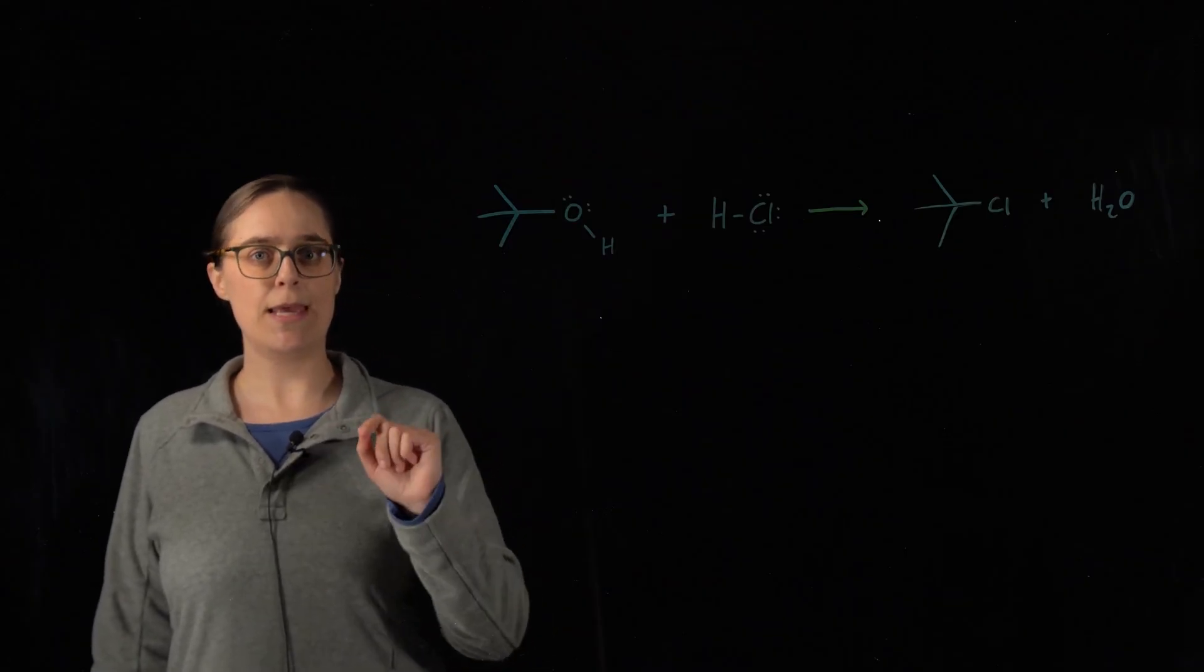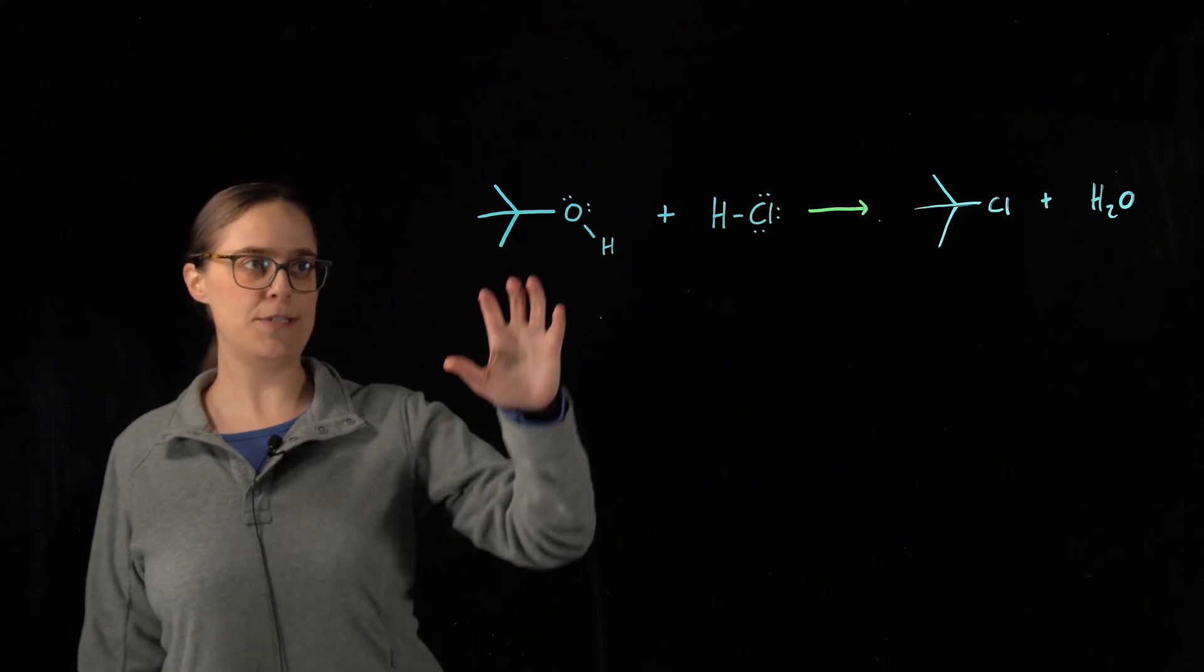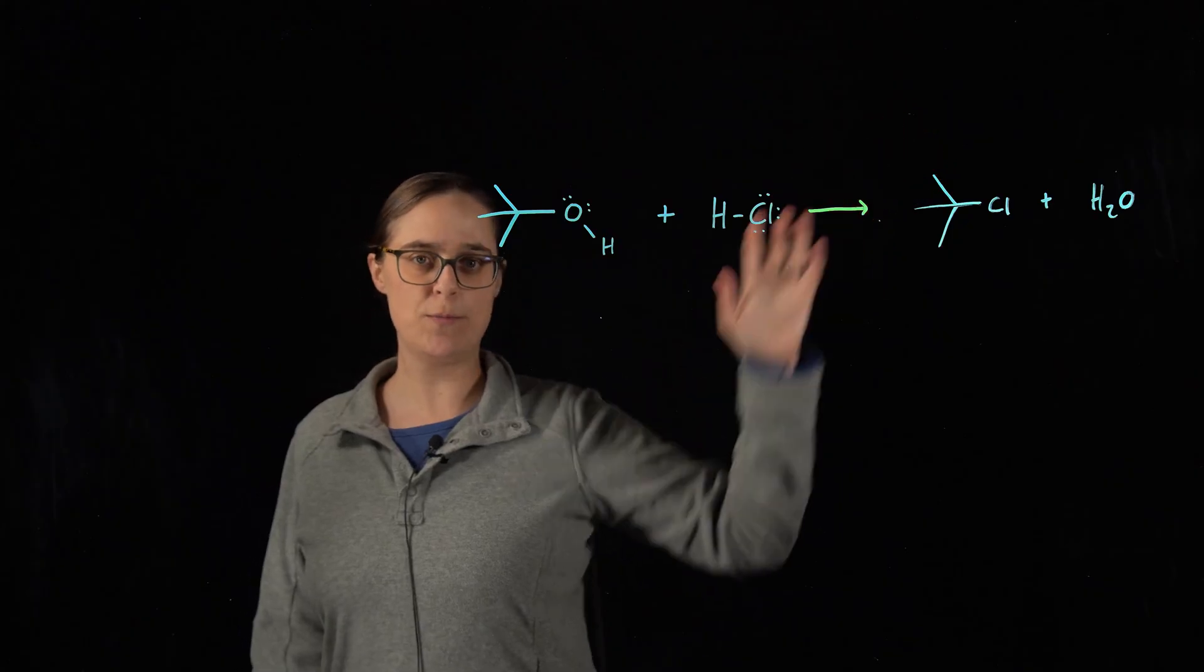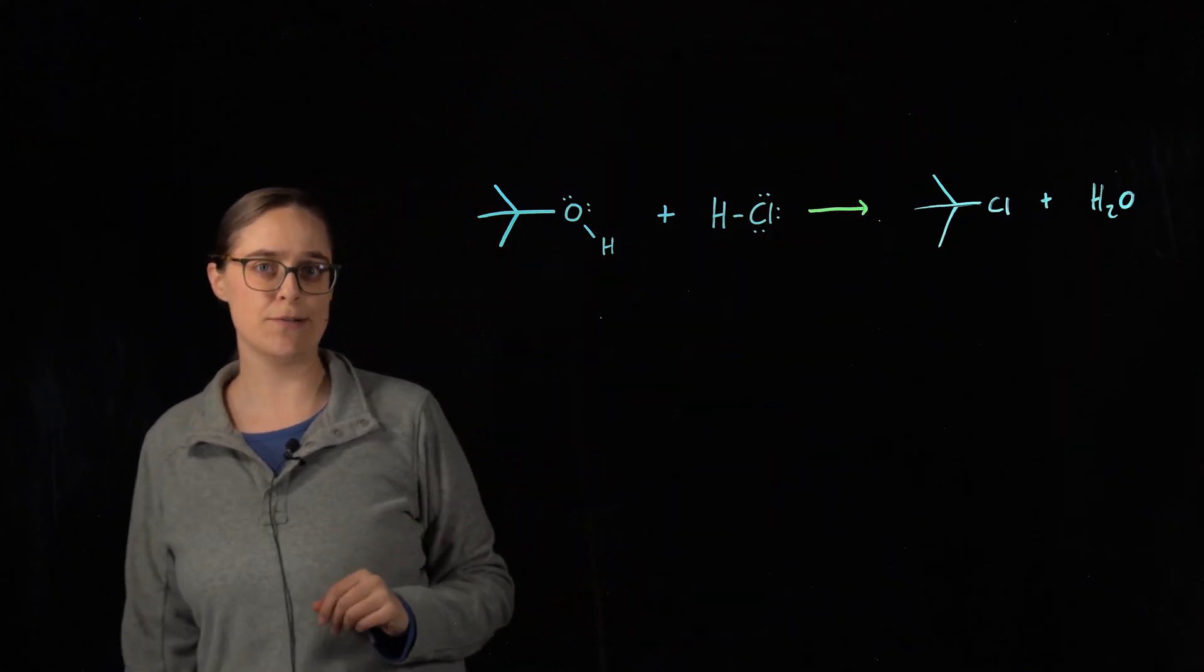Next, there is a big difference between a chemical equation and a reaction mechanism. A chemical equation gives you the initial reactants, meaning your starting materials, and the final products, meaning the ending materials.